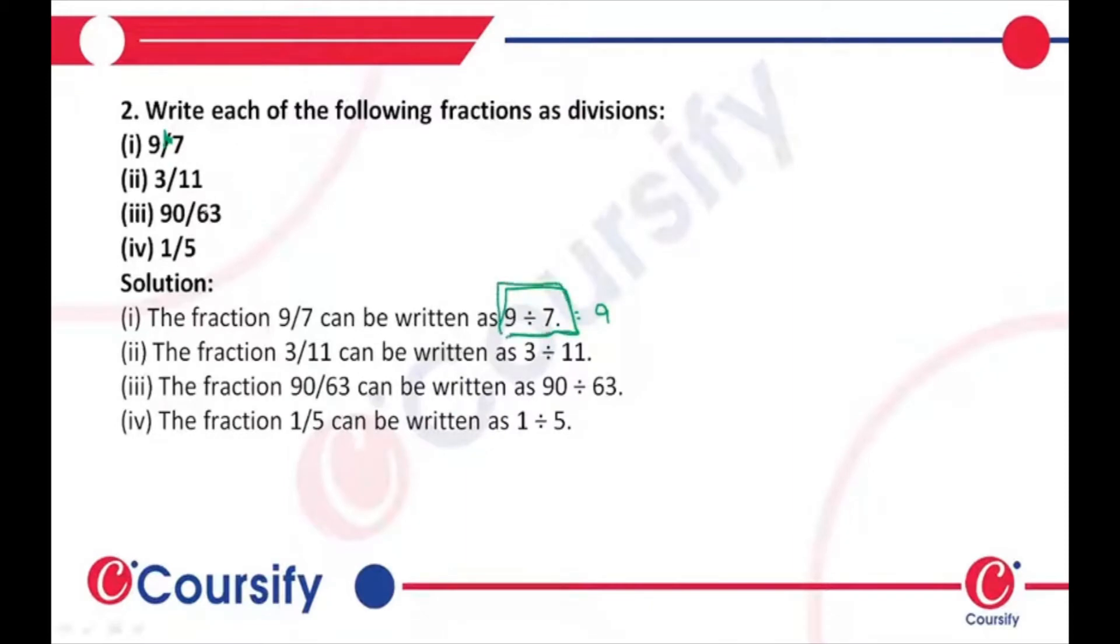For the next question, 3 by 11 can be written as 3 divided by 11. How can we write it as 3 divided by 11? Basically, 3 by 11 is equal to some A. So 3 divided by 11 is also basically the same operation that you're doing.